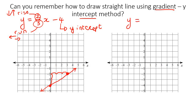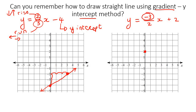Let me give you a few more examples. What if we have negative 3 over 2x plus 2? The y-intercept is 2, so we put a little dot there. The rise is minus 3, so we go 3 down — 1, 2, 3 — and then we go 2 to the right — 1, 2 — put a little dot, and connect them.